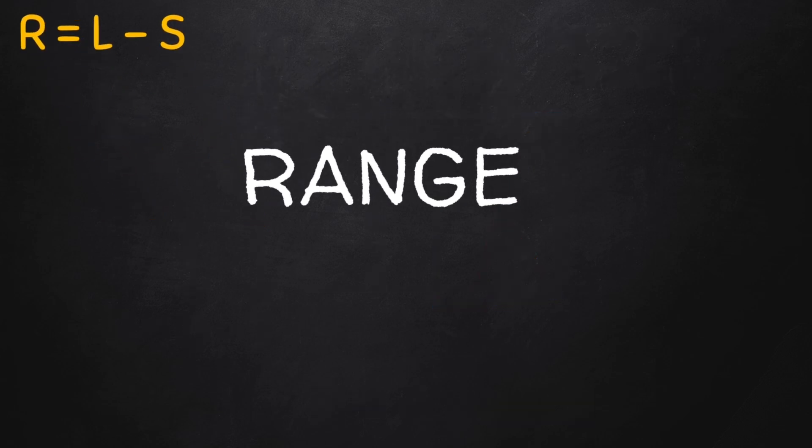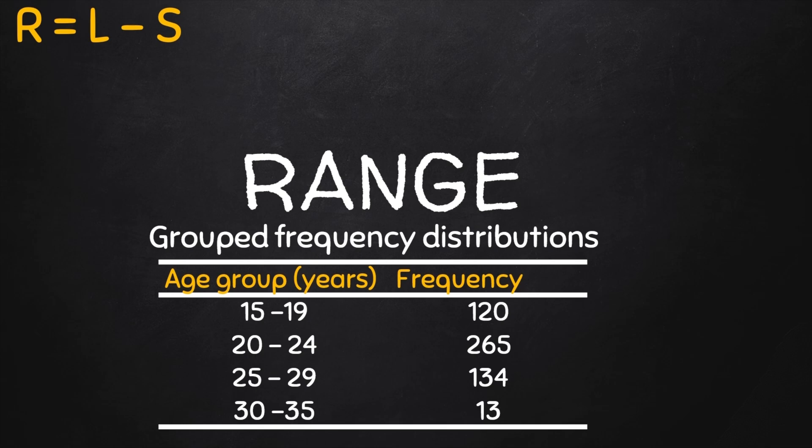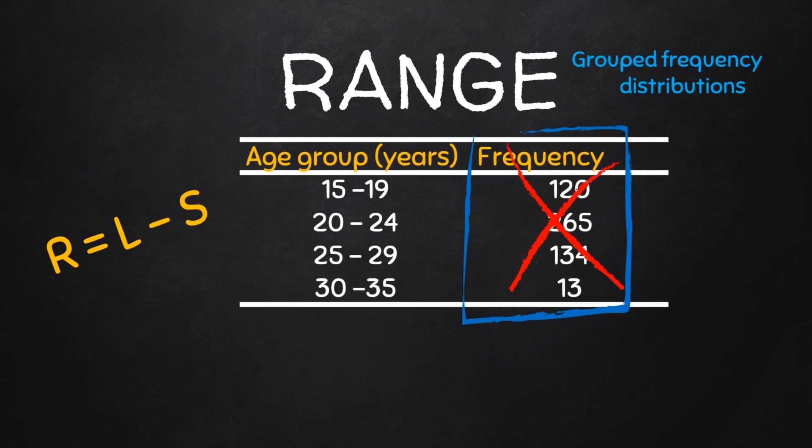Similarly, in the case of a group distribution like the data of the ages of medical students in Amarubello University, Nigeria, here also the frequency of the various groups or classes do not matter, and the range for the group data is given by the difference between the upper limit of the class having the highest values minus the lower limit of the class having the smallest values.